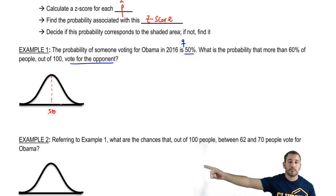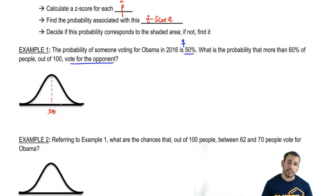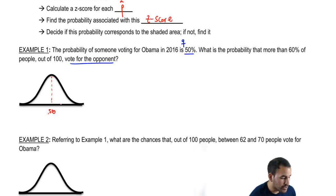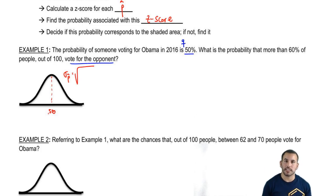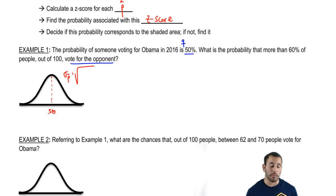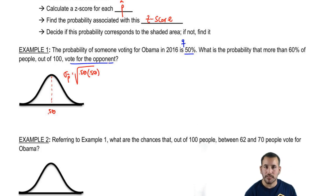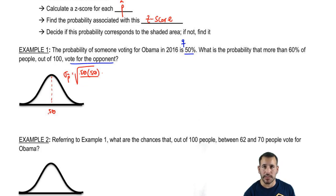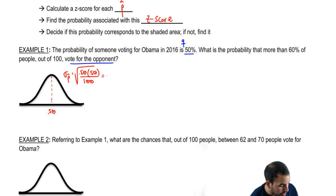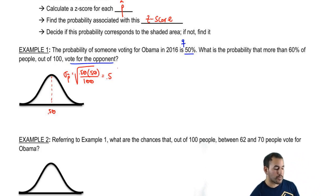Our standard error is the square root of PQ over N. P, our population proportion for the opponent, is 0.50. Q, the probability of failure, is also 0.50. Divided by our sample size of 100. This ends up giving us 0.05. So our standard error is 0.05 and our measure of center is 0.50.